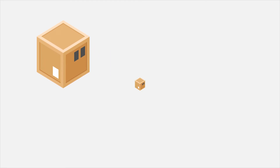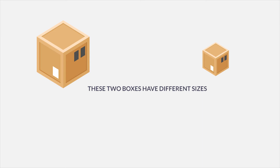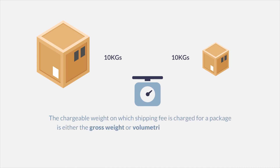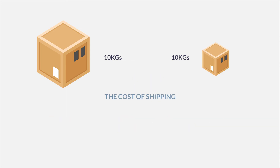This box weighs 10 kilograms. This box also weighs 10 kilograms. These two boxes are different in sizes, but both weigh 10 kg. The chargeable weight on which shipping fees is charged is either the gross weight or volumetric weight, whichever is greater. The cost of shipping the bigger box will almost always be charged on its volumetric weight, whereas the smaller box will typically be charged according to its gross weight.